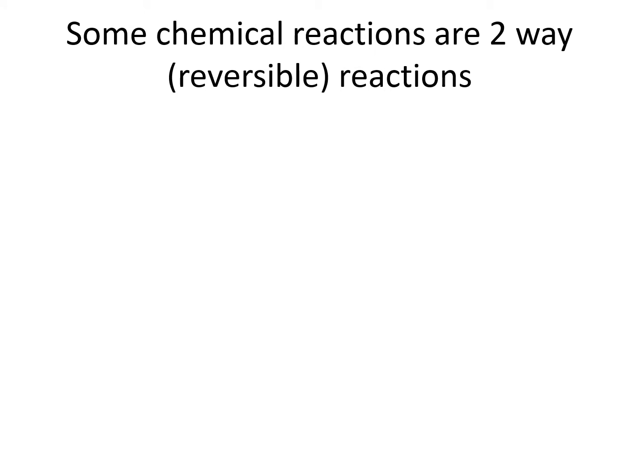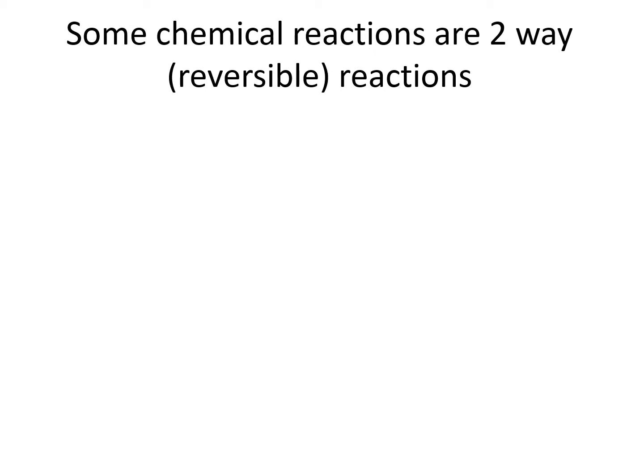But some reactions are two way or reversible reactions. And with these reactions, the reactants can turn into products, but the products can also turn into reactants. And for this, we use this double headed arrow.